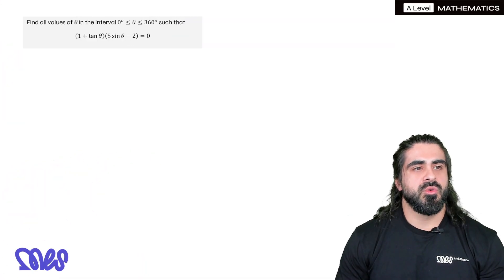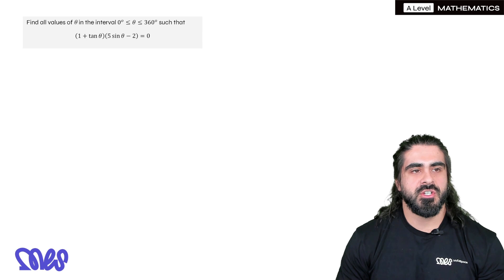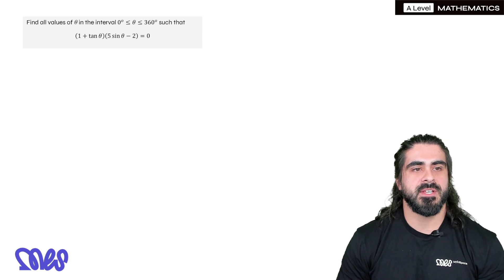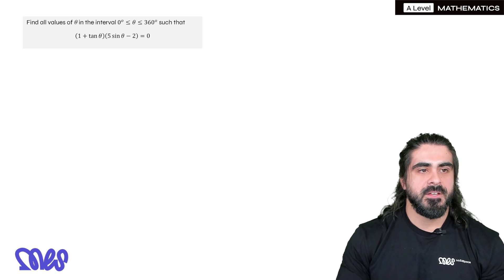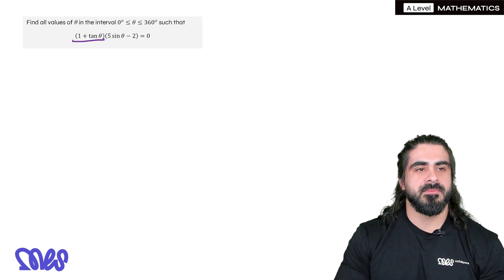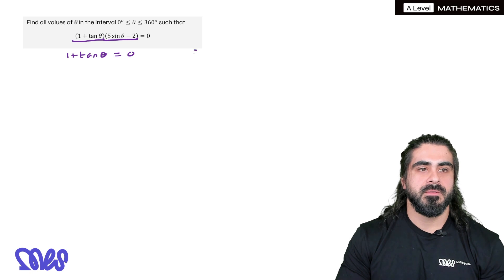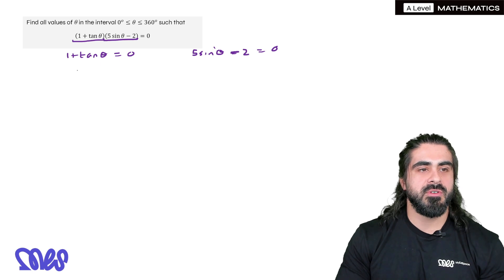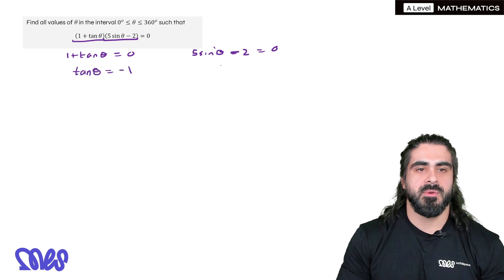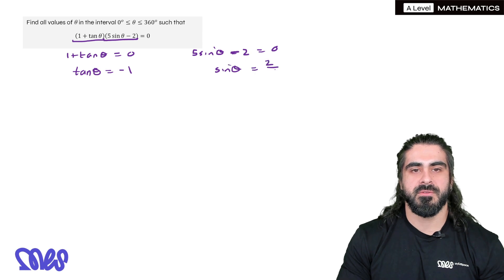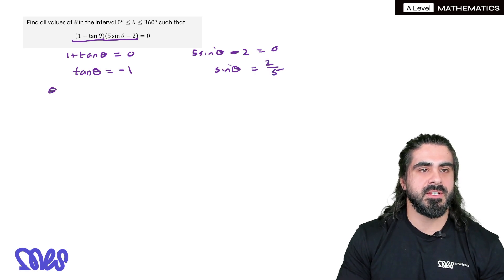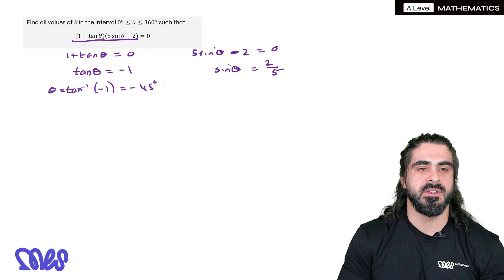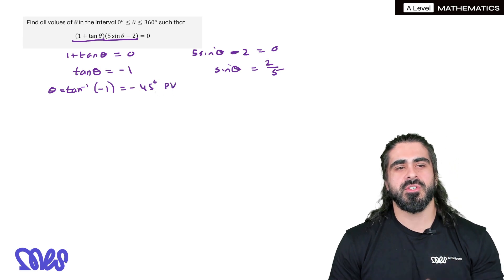Okay, last question. Find all the values of x between 0 and 360 such that 1 plus tan theta times 5 sin theta minus 2 is 0. So I've been kind enough to factorize this. And just like algebra, it means 1 plus tan theta is 0 or 5 sin theta minus 2 is 0. So we rearrange for tan here. And then we rearrange for sin. We get 2 fifths. So here, theta is inverse tan of minus 1, which is minus 45 degrees, which is the primary value. Let's just focus on this for now.